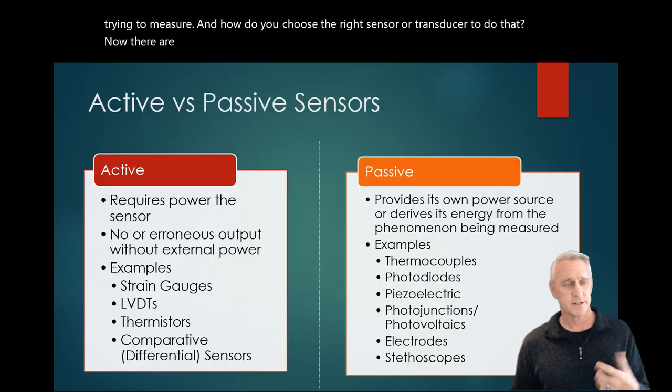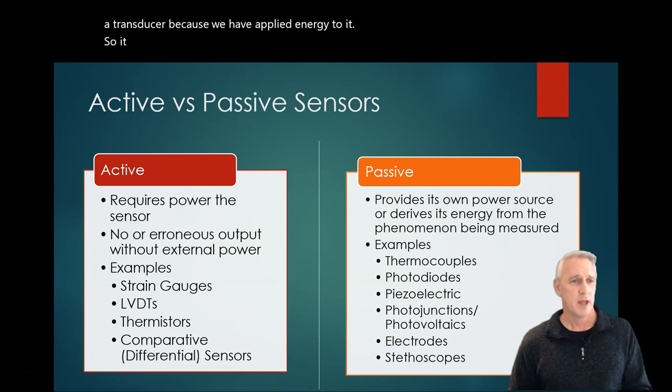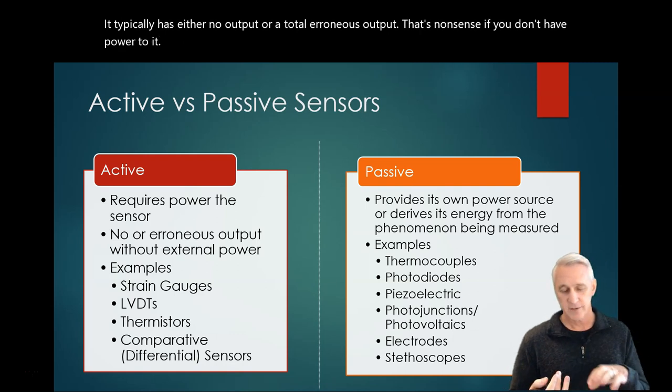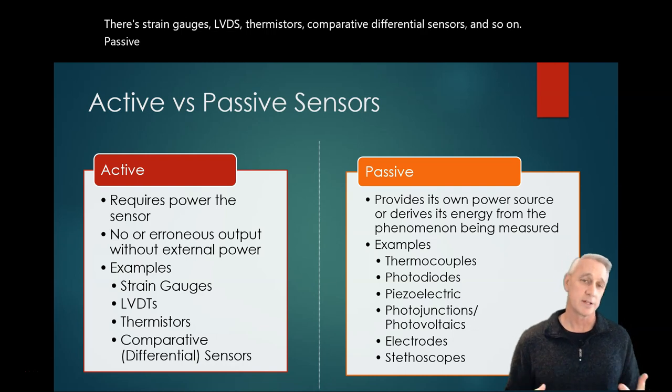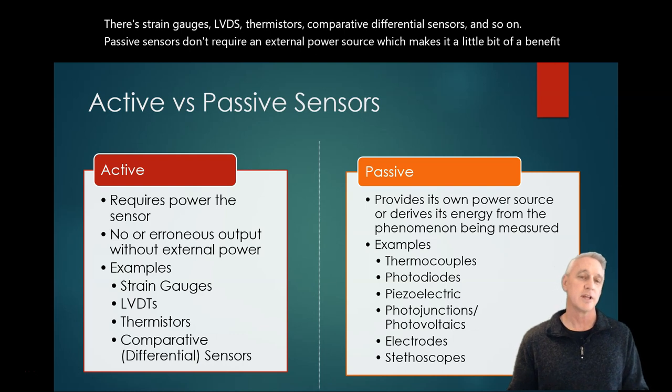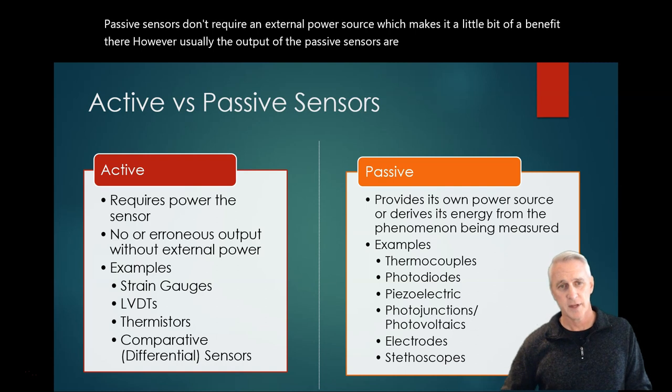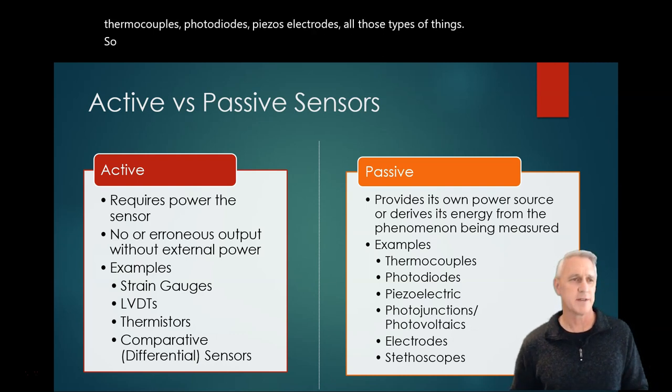There are active and passive sensors. An active sensor starts getting into the neighborhood of a transducer because we have applied energy to it. So it requires power. It typically has either no output or a total erroneous output that's nonsense if you don't have power to it. There's several different examples: strain gauges, LVDTs, thermistors, comparative differential sensors, and so on. Passive sensors don't require an external power source, which makes a benefit there. However, usually the output of the passive sensors are lower, so they're just a smaller signal. You'll probably have to require some amplification afterwards. These are things like thermocouples, photodiodes, piezos, electrodes, all those types of things.